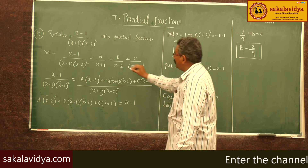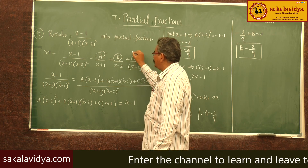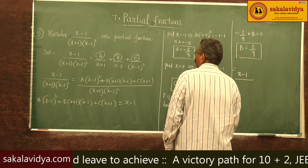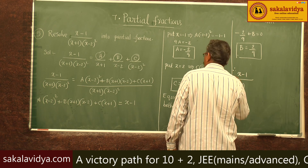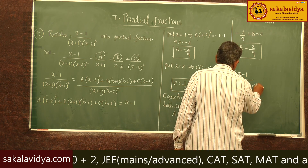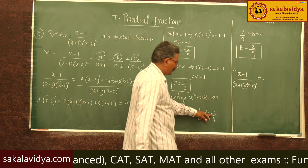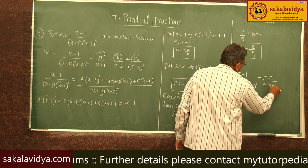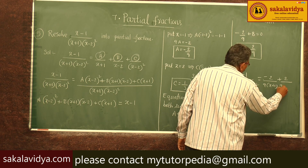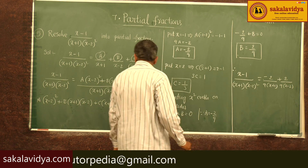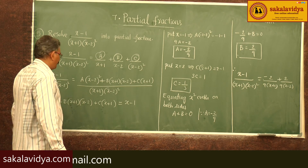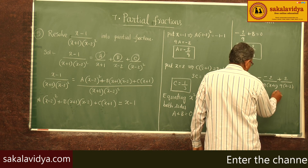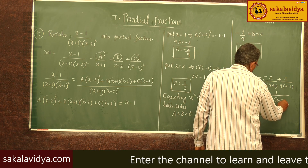Now substituting A, B, and C values, we get the partial fractions. Therefore: (x minus 1) by [(x plus 1)(x minus 2)²] equals (minus 2 by 9) by (x plus 1) plus (2 by 9) by (x minus 2) plus (1 by 3) by (x minus 2) squared.